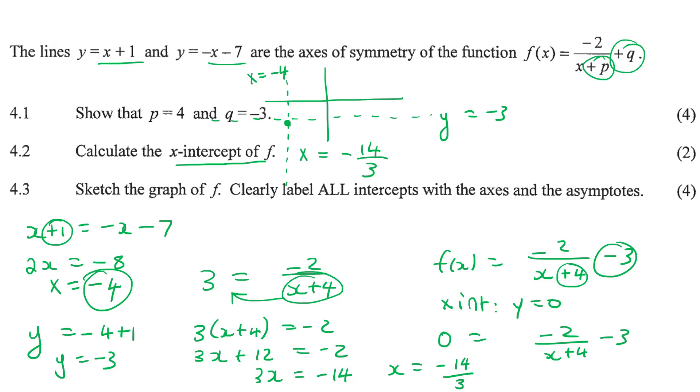They now want us to draw the graph. So we've learned, when we learned how to draw hyperbolas, we know that we need asymptotes, both of them. We've got them over here. We need an x-intercept. We've just found that over here. Now what is 14 over 3?